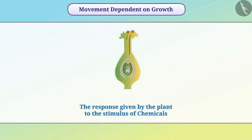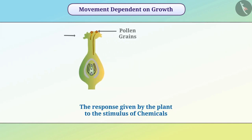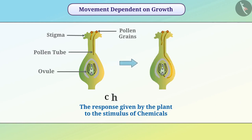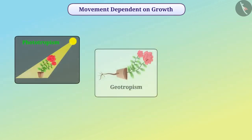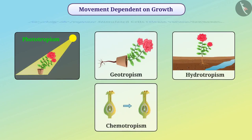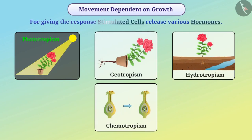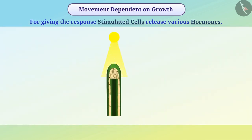Plants also respond to the stimulus of chemicals. For example, when pollen grains reach the stigma, a pollen tube develops to take the pollen grain towards the ovule — this is called chemotropism. Plants respond to various environmental stimuli, and stimulated cells release various hormones depending on the stimulus. For example, a plant detects the stimulus of light, causing the shoot to produce the hormone auxin.